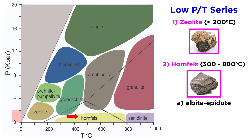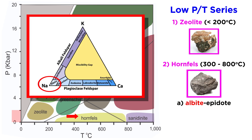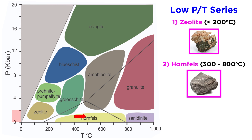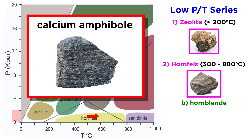Once we pass about 300 degrees Celsius, we encounter the albite epidote hornfels facies. Hornfels is a general name for a rock that has undergone contact metamorphism, and albite epidote refers to the stable minerals under these conditions. Albite is the sodium end member of plagioclase feldspar, and epidote is a somewhat obscure iron-containing sorosilicate. At around 500 degrees Celsius, hornblende will begin to crystallize as we move into the hornblende hornfels facies.